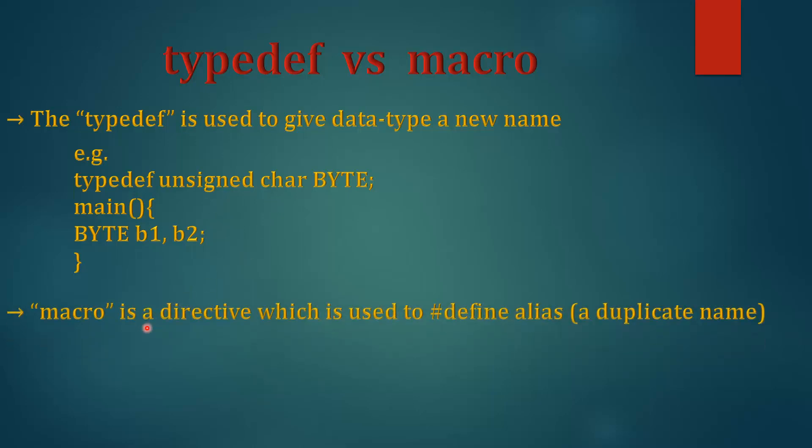Now macro. Macro is a directive which is used to define an alias, and it is basically a duplicate name. Let's see an example. We have defined HYD for Hyderabad in double quotes. So wherever in our code we write HYD in capital, it will be replaced by Hyderabad in double quotes. For example, here, if we write printf and then HYD, it will be replaced by Hyderabad.